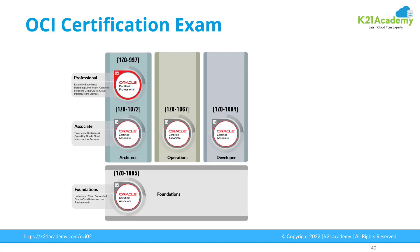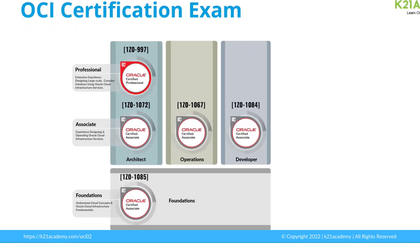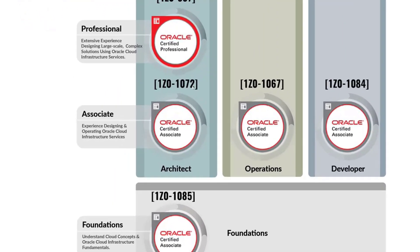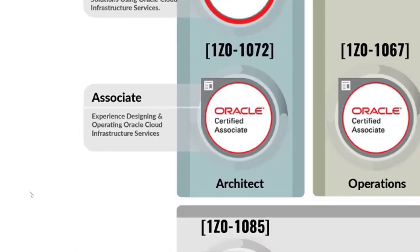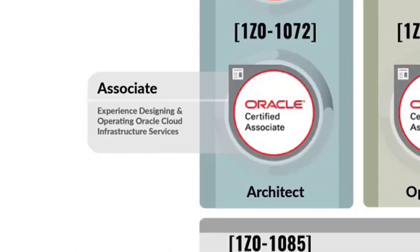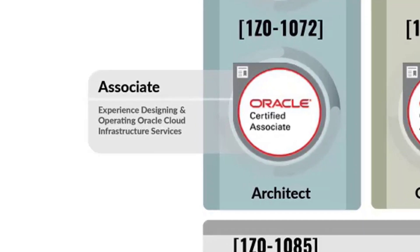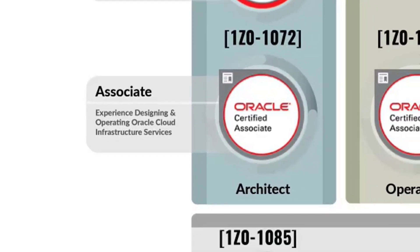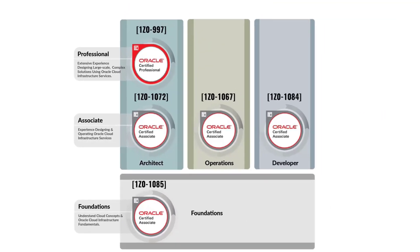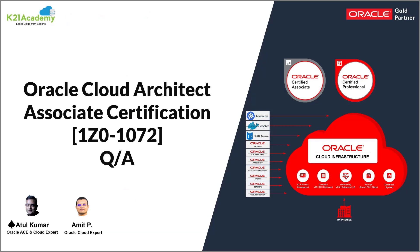Whether you are new to Oracle Cloud or have been working and not yet certified, I highly recommend you become Oracle certified, especially in the architect line. The certification is OCI Architect Associate, exam number 1z0-1072. I highly recommend this even if you are not planning to become an architect, because this certification gives you an overall picture of OCI and everything you must learn. I run a free 90-minute session with cloud expert Amit where we discuss everything related to the Oracle Cloud Architect Associate certification.